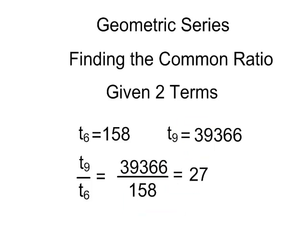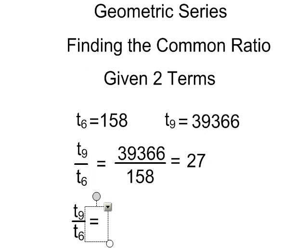Now if we go back to the way the formulas look, T9 divided by T6 is equal to a times r to the exponent 8, where a is the first term and r is the common ratio, divided by a times r to the exponent 5, where a is the first term and r is the common ratio.